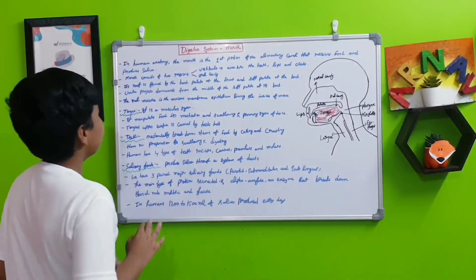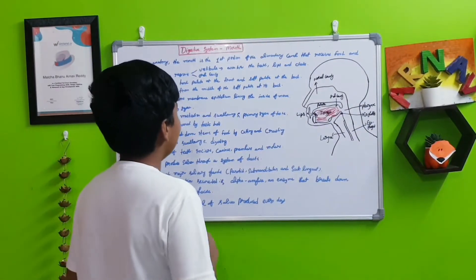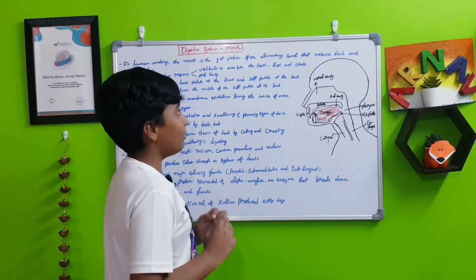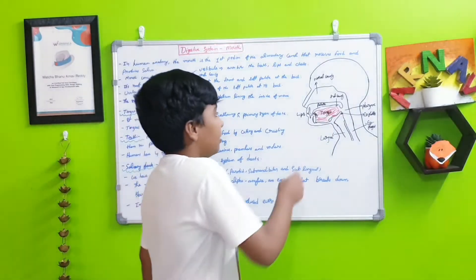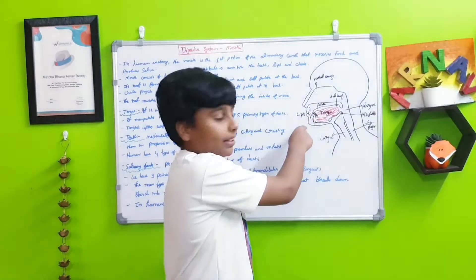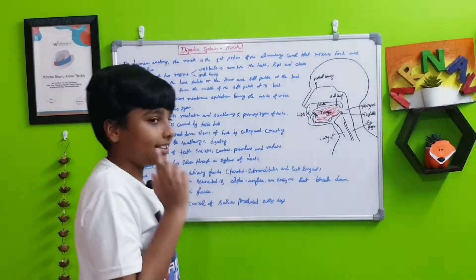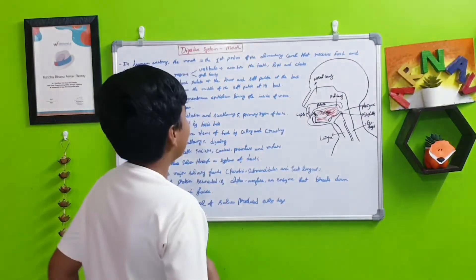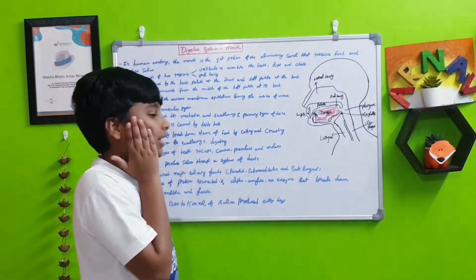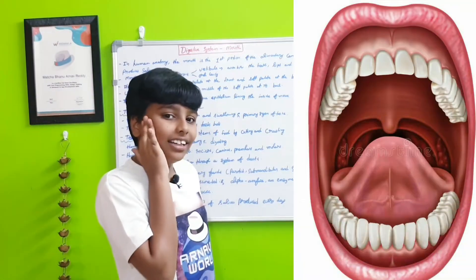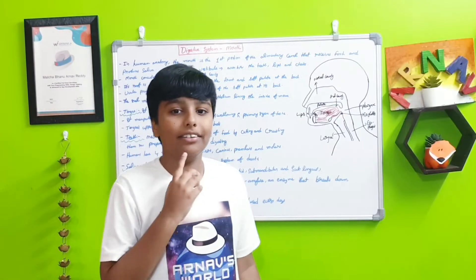The mouth consists of two regions: the vestibule, which is the area between the teeth, lips and cheeks, which is just up here between the lips, teeth and the cheeks. Next is the oral cavity which is behind it, in this place, where I'm showing my finger.